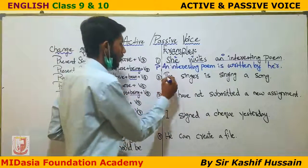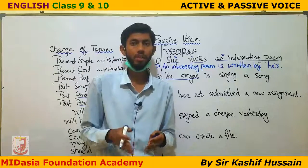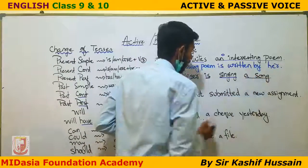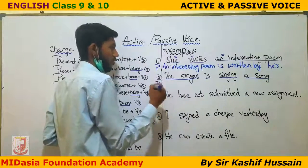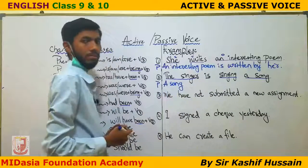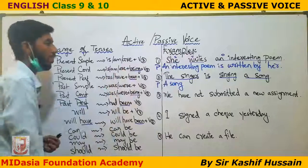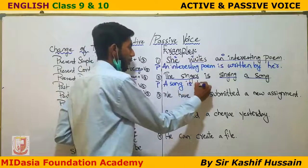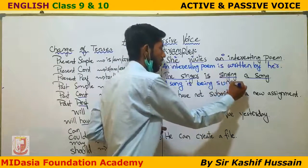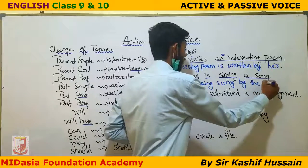Now let's look at the second sentence: 'The singer is singing a song.' 'The singer' is the subject. When making passive voice, you always move the object to the subject position. So first, take the object: 'a song.' The tense is present continuous, so we use 'is being' — 'A song is being sung by the singer.'